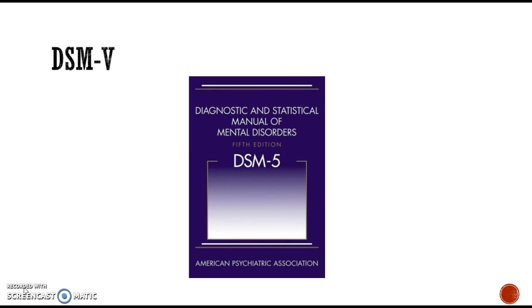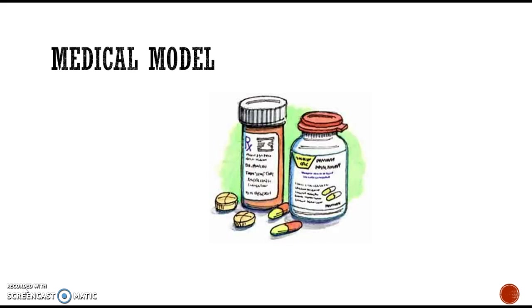One thing that psychology and the DSM uses now is the medical model. The medical model basically says that psychological disorders are a sickness that need to be diagnosed, treated, and cured. There are over 250 different types of therapies and treatments out there that work with this medical model.